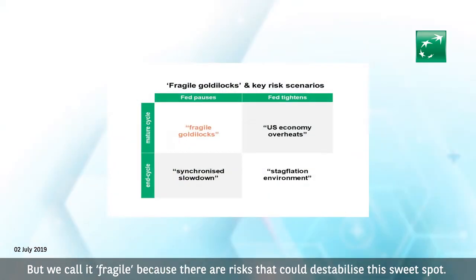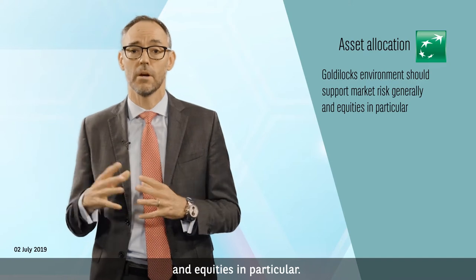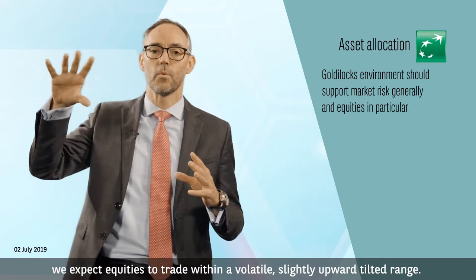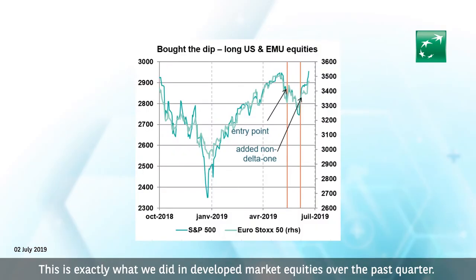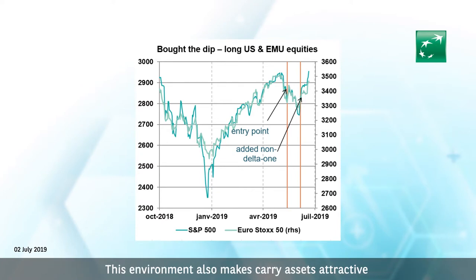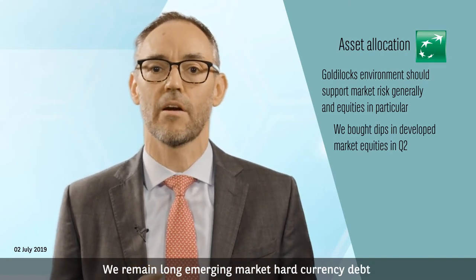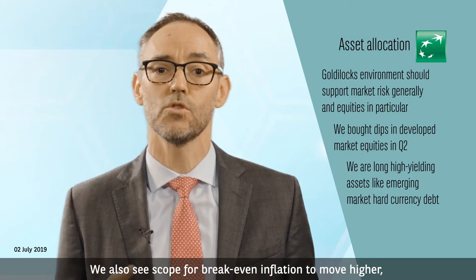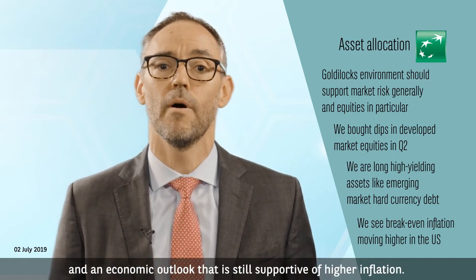We call it fragile because there are risks that could destabilize the sweet spot. In terms of our asset allocation, a Goldilocks environment should support market risk generally, and equities in particular. But given the ongoing cross-currents, we expect equities to trade within a volatile, slightly upward-tilted range. Our roadmap is therefore to buy equities on dips — this is exactly what we did in developed market equities over the past quarter. This environment also makes carry trades attractive, as further compression in real yields should support high-yielding assets. We remain long emerging market high-yield currency debt and are looking for tactical entry points on other high-yield assets. We also see scope for breakeven inflation to move higher, especially in the US, given the combination of a dovish Fed and an economic outlook that is still supportive of higher inflation.